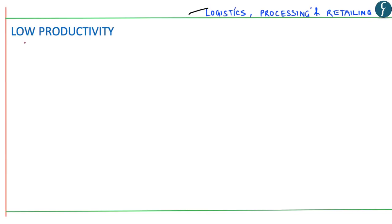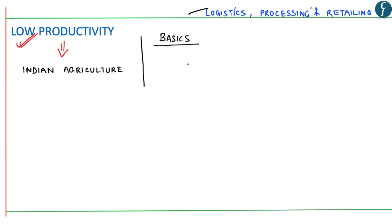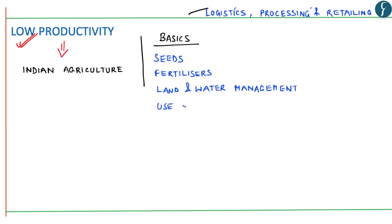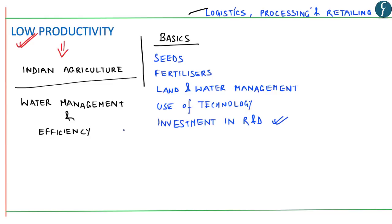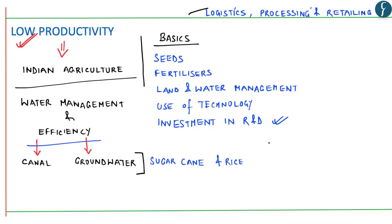The next issue highlighted is low productivity in Indian agriculture. On this aspect, highlighting the basics becomes extremely important — like seeds, fertilizers, land and water management, and use of technology. Investment in research and development is also extremely necessary. Water management and efficiency is also necessary in both canal and groundwater management, because some crops need more water than others. More than 60% of irrigation water is consumed by rice and sugarcane. Hence water management and efficiency for different crops becomes extremely important.